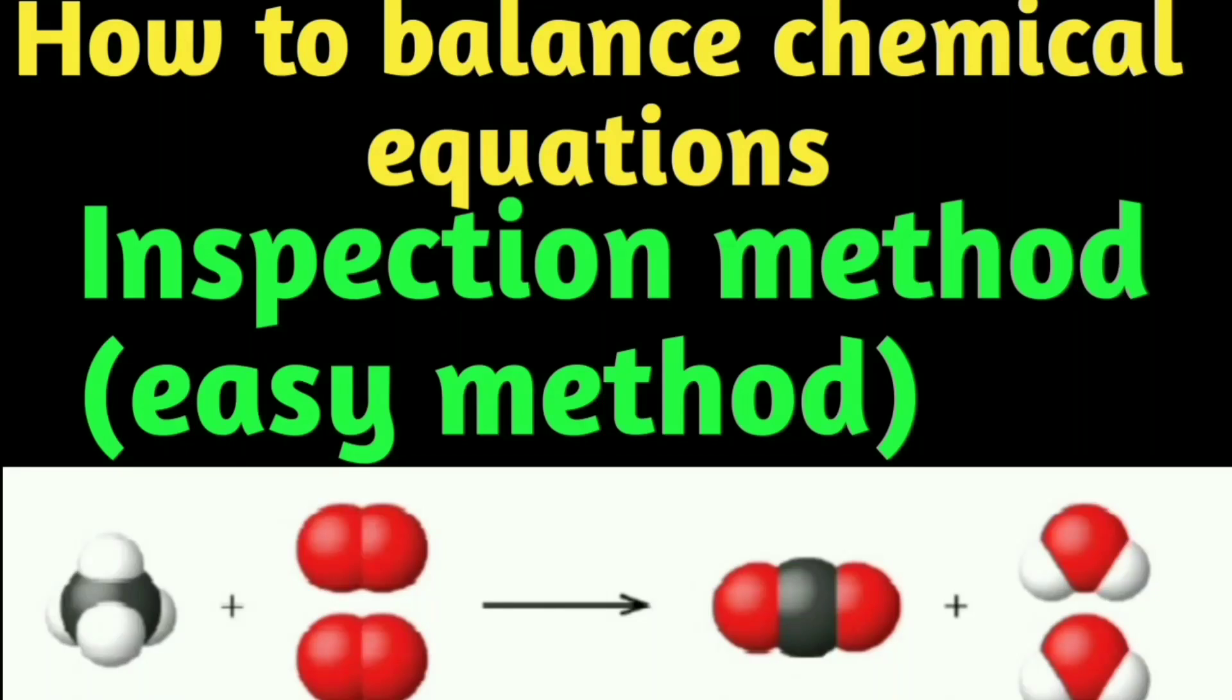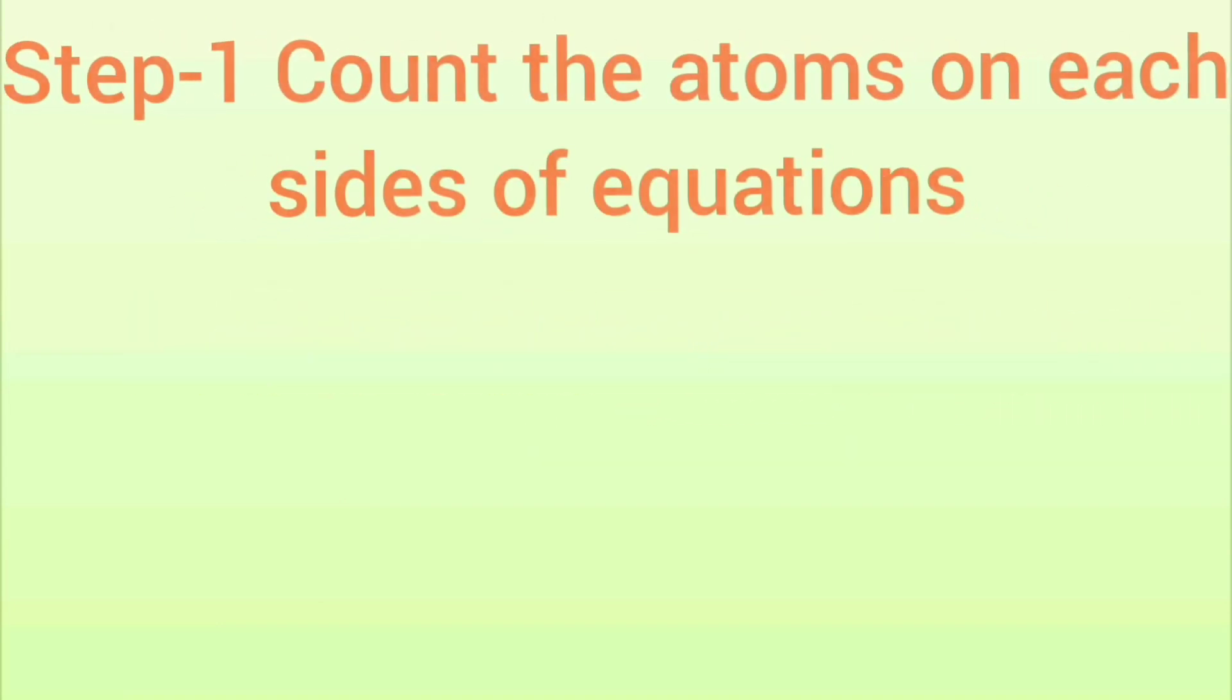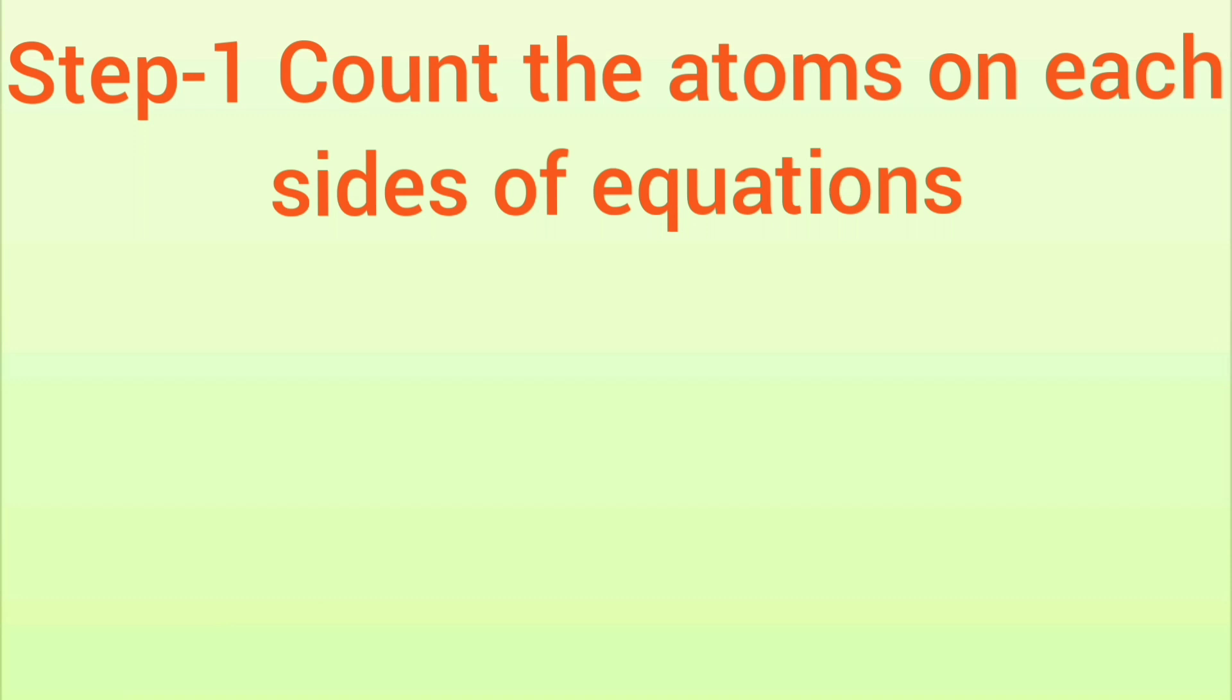Hello students, today we will discuss how to balance chemical equations by inspection method in two easy steps. First step: count the atoms on each side of the equation.